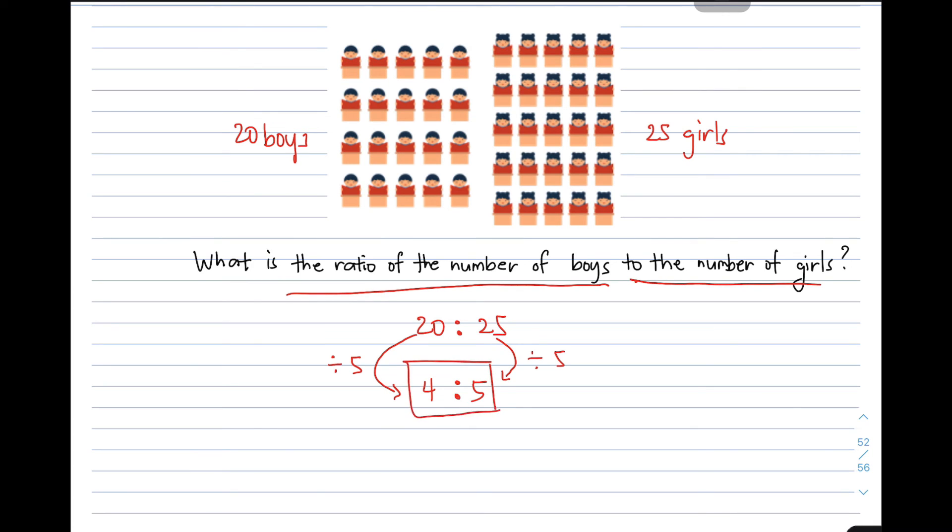So the final answer here, or the ratio of the number of boys to the number of girls in the given class, is 4 is to 5. I hope that in this given video, you learned something from me about ratio.